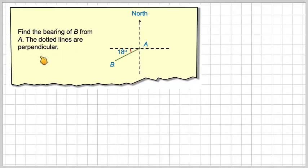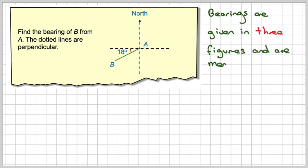Find the bearing of B from A. The dotted lines are perpendicular. And so, first of all, we'll state that bearings are given in three figures and are measured clockwise from north.